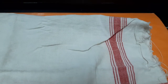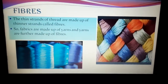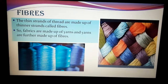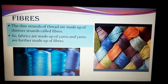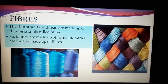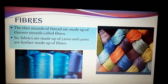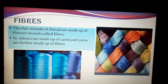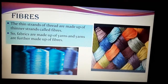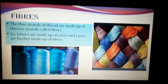Now students, let us continue with our chapter. I have already told you that clothes are called different types of fabrics — different types of cloth materials are there. Just now I showed you how to find out one thread or one yarn. The fabrics are made up of yarns, and the yarns can also be separated into thinner strands, which are called fibers.